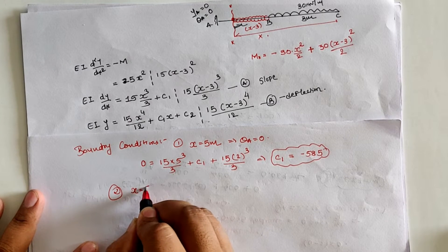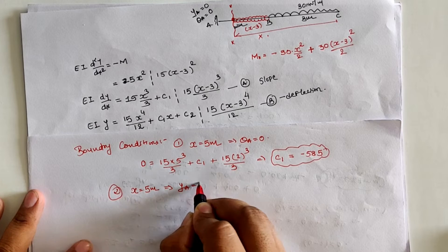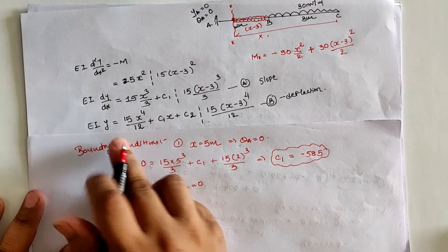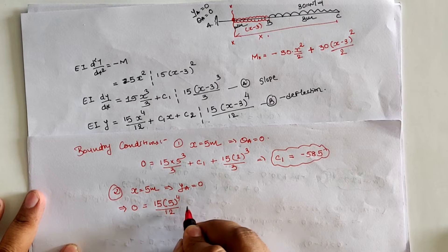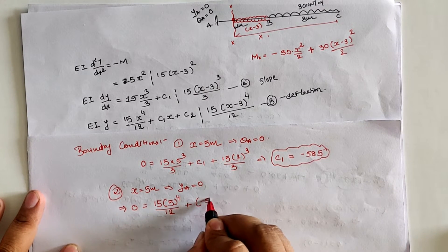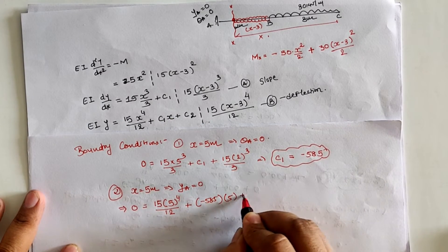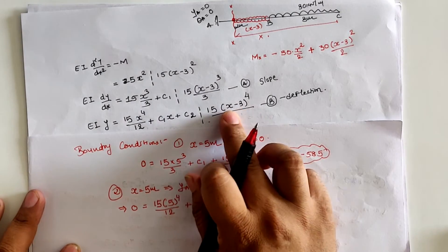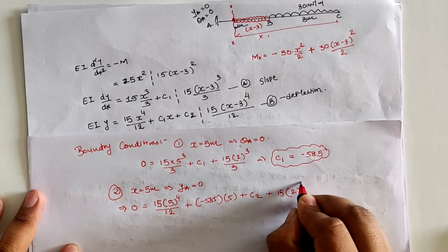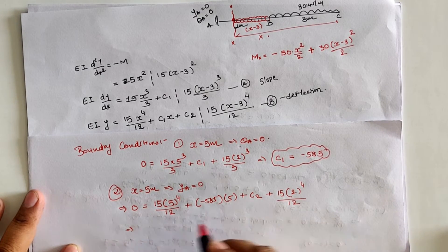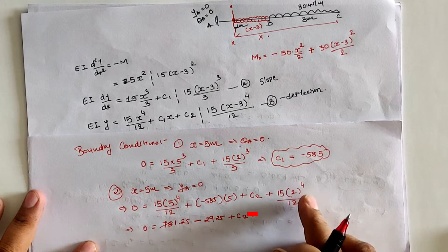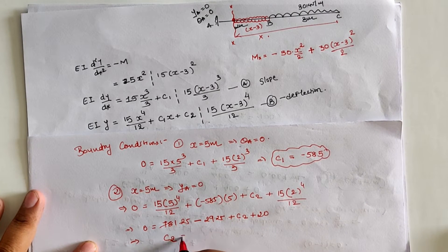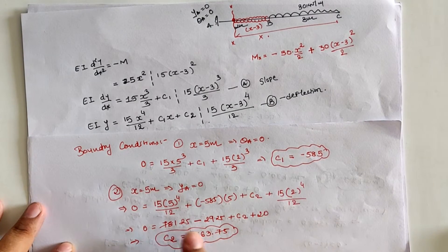Using the second boundary condition: when x = 5 m at location A, deflection y = 0. From equation B: 0 = 15(5)⁴/12 + C₁(5) + C₂ − 15(5 − 3)⁴/12. Substituting C₁ = −585 and (5 − 3) = 2: 0 = 15(625)/12 − 585(5) + C₂ − 15(16)/12. Solving gives C₂ = 2163.75.